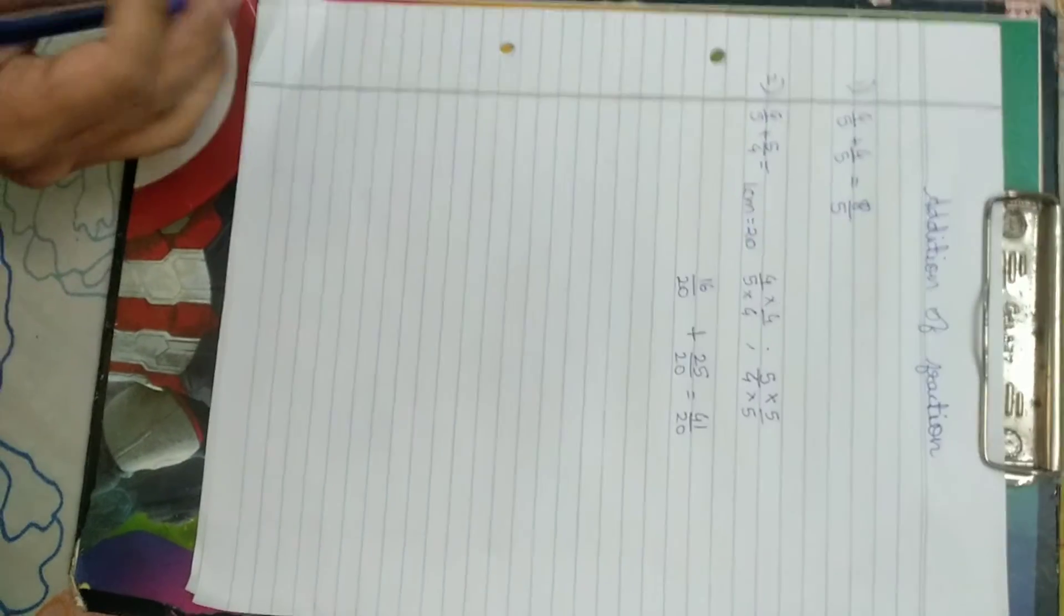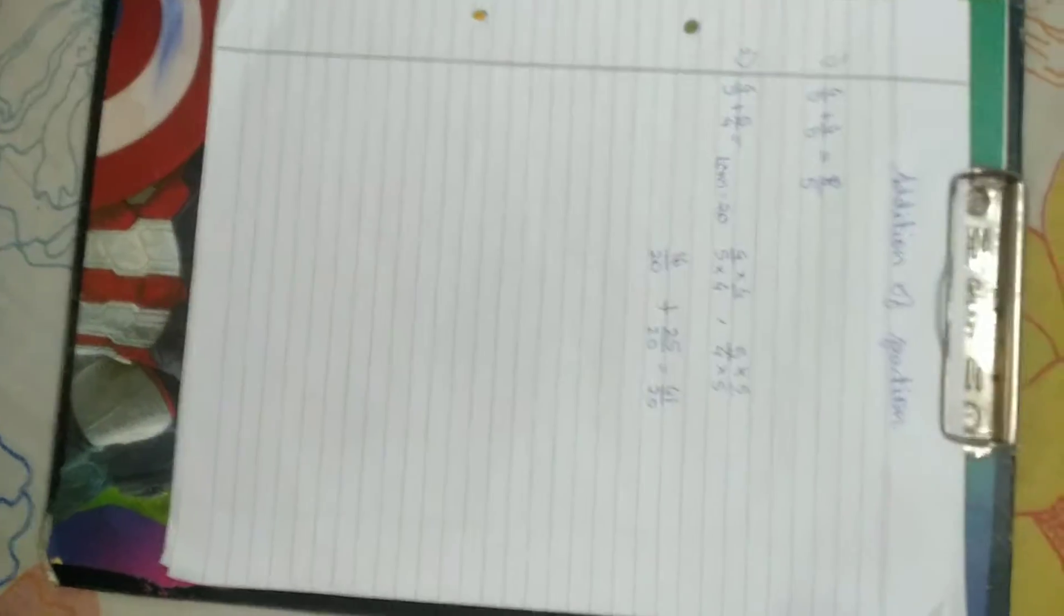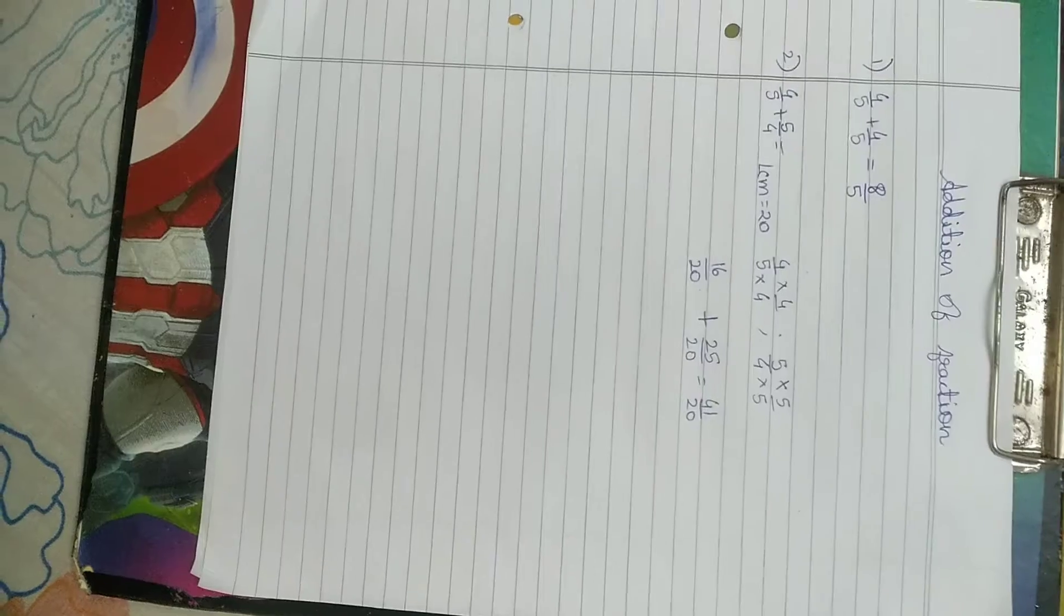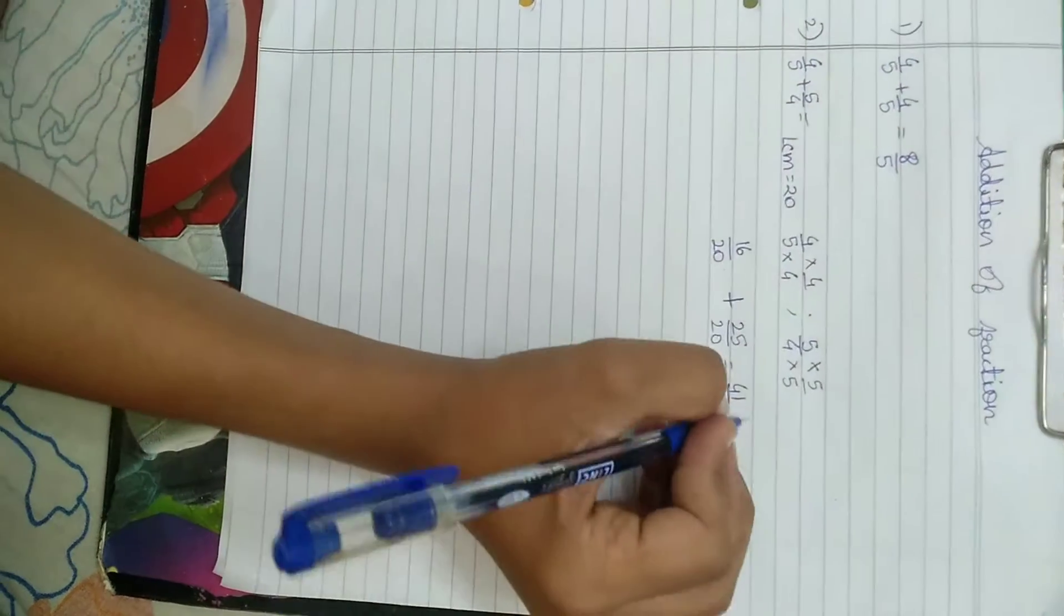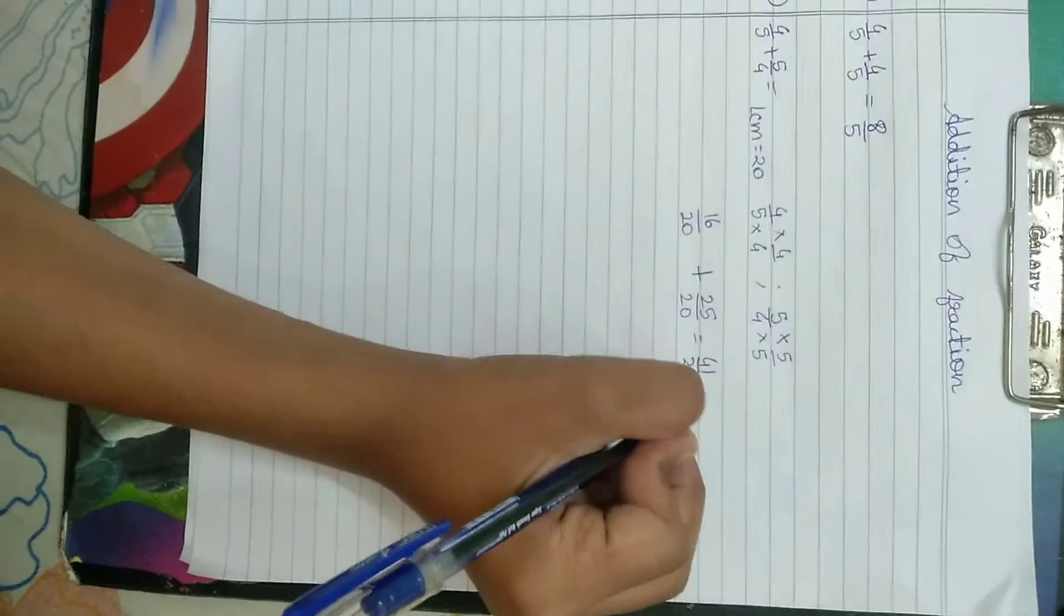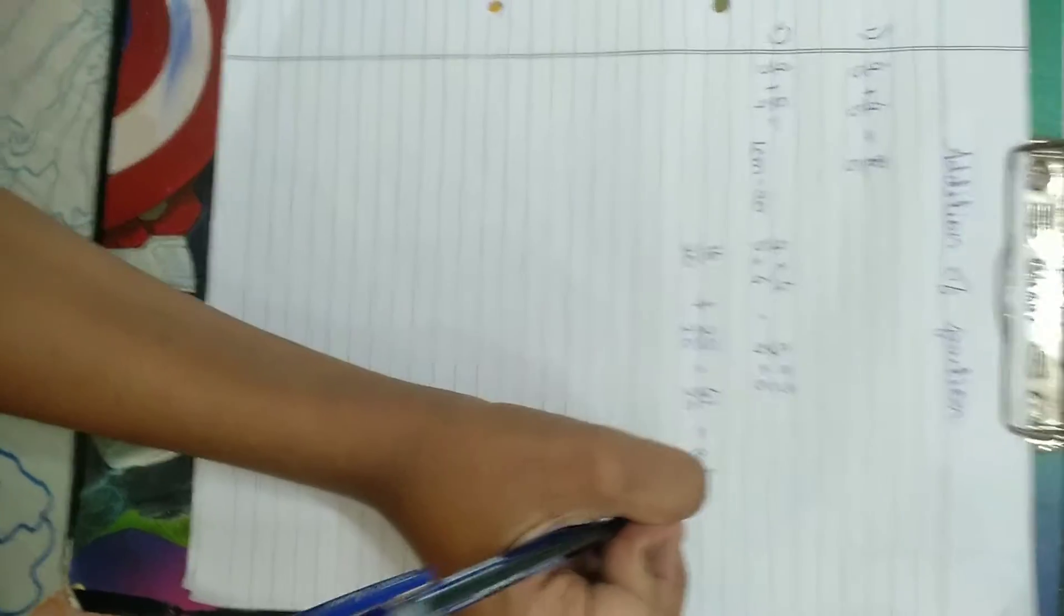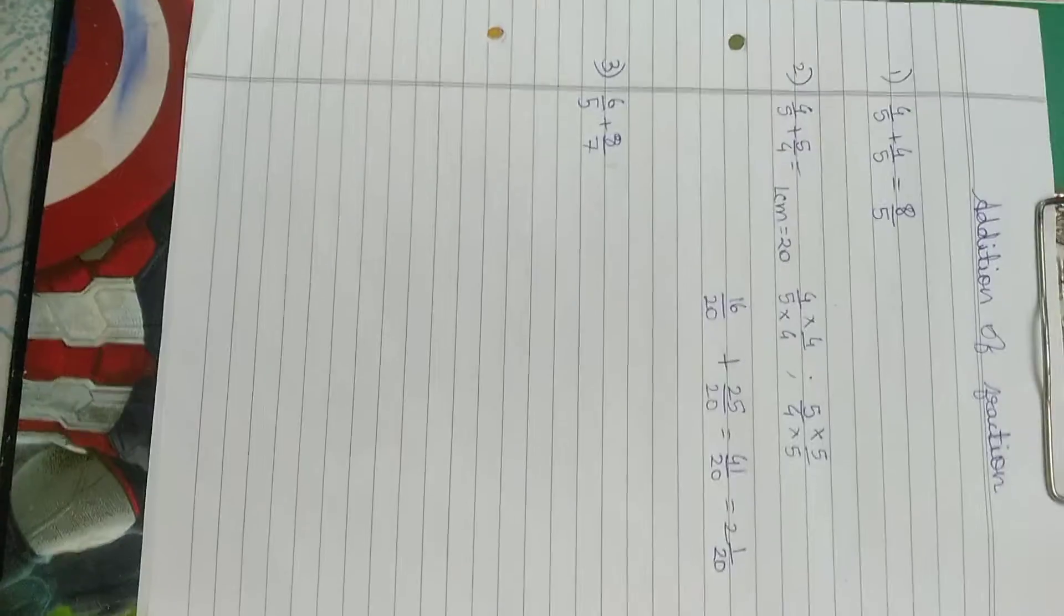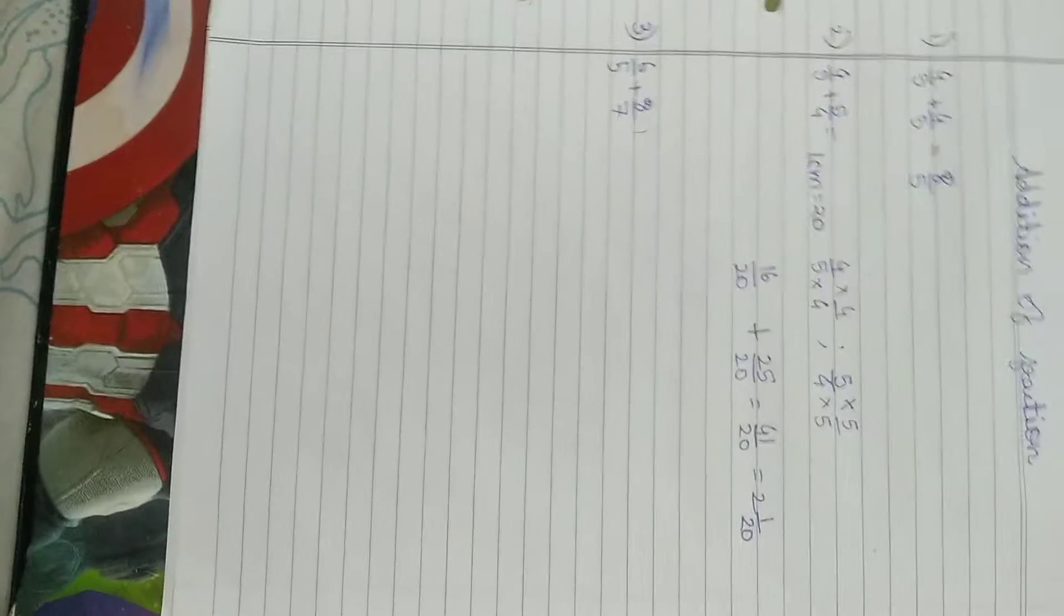It is in improper form. So we will convert it into mixed fraction. So it would be 2 and 1 by 20.